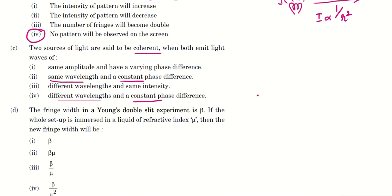Two red waves interfere or two blue waves interfere and we can get the interference pattern. So which means that they should have same wavelength and a constant phase difference. Then we can call those two sources as coherent sources.